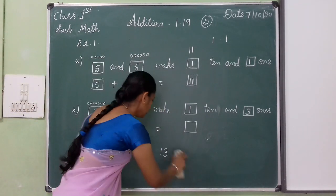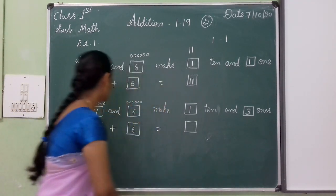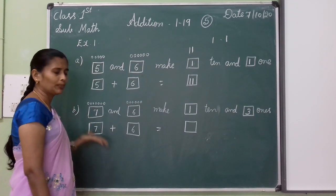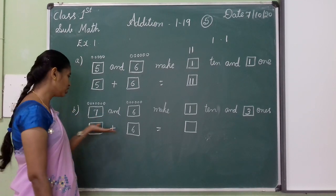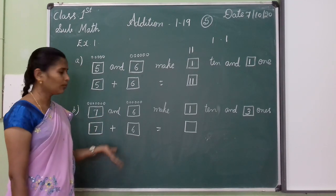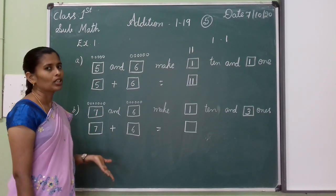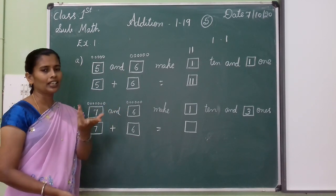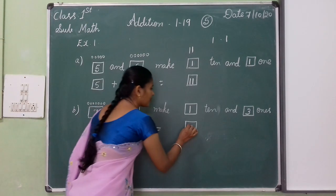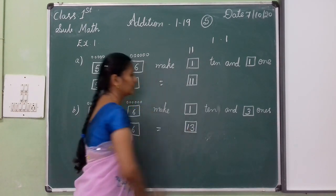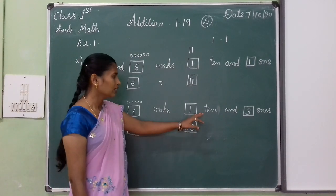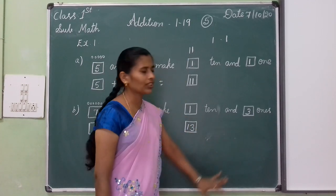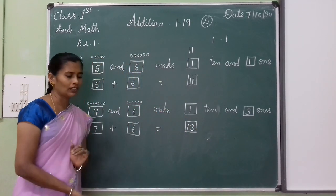How is it done? Seven plus six. You always keep the bigger number in your mind and smaller number on your finger. Seven is the bigger number, six is the smaller number. So seven in your mind, six on your fingers. After seven: 8, 9, 10, 11, 12, 13. In thirteen, one ten and three ones are there.